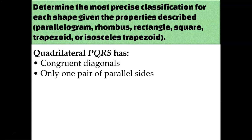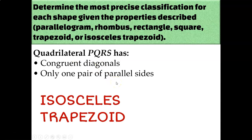Quadrilateral PQRS has congruent diagonals and only one pair of parallel sides. Congruent diagonals might initially make you think of rectangles, but remember they're not the only shape with congruent diagonals. This quadrilateral can't be a rectangle because it only has one pair of parallel sides, and rectangles have two pairs. One pair of parallel sides means it has to be a trapezoid, and if it also has congruent diagonals, then it must be an isosceles trapezoid.